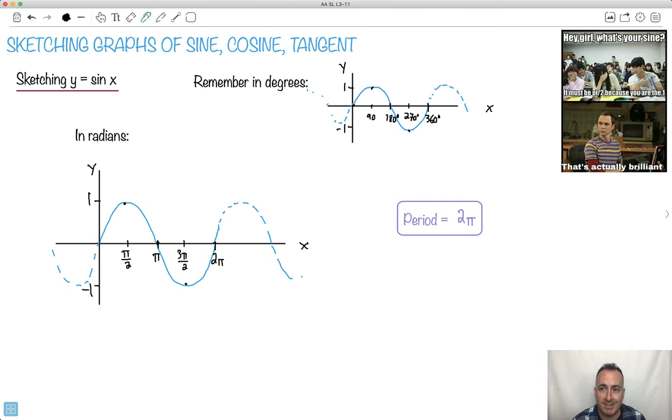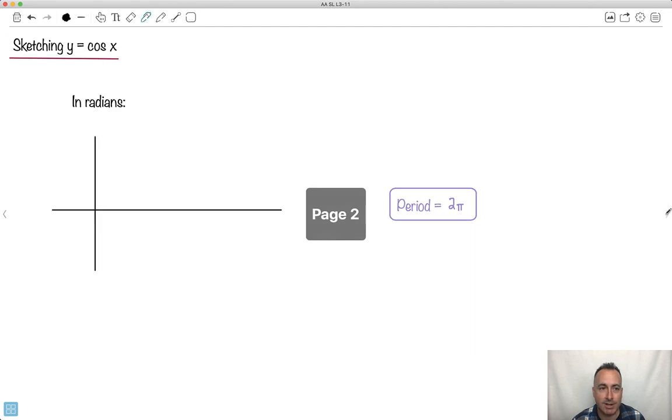Now, why is it this then? Hey girl, what's your sine? I mean, it's a little bit sexist, but bear with me here. Look, it must be pi over 2 because you were the one. Let's see why. If we do the sine when x is pi over 2, look at the value. It's 1. It's actually brilliant. It's Sheldon from Big Bang Theory, if you ever watch that old show. Anyhow, let's go to the next one.